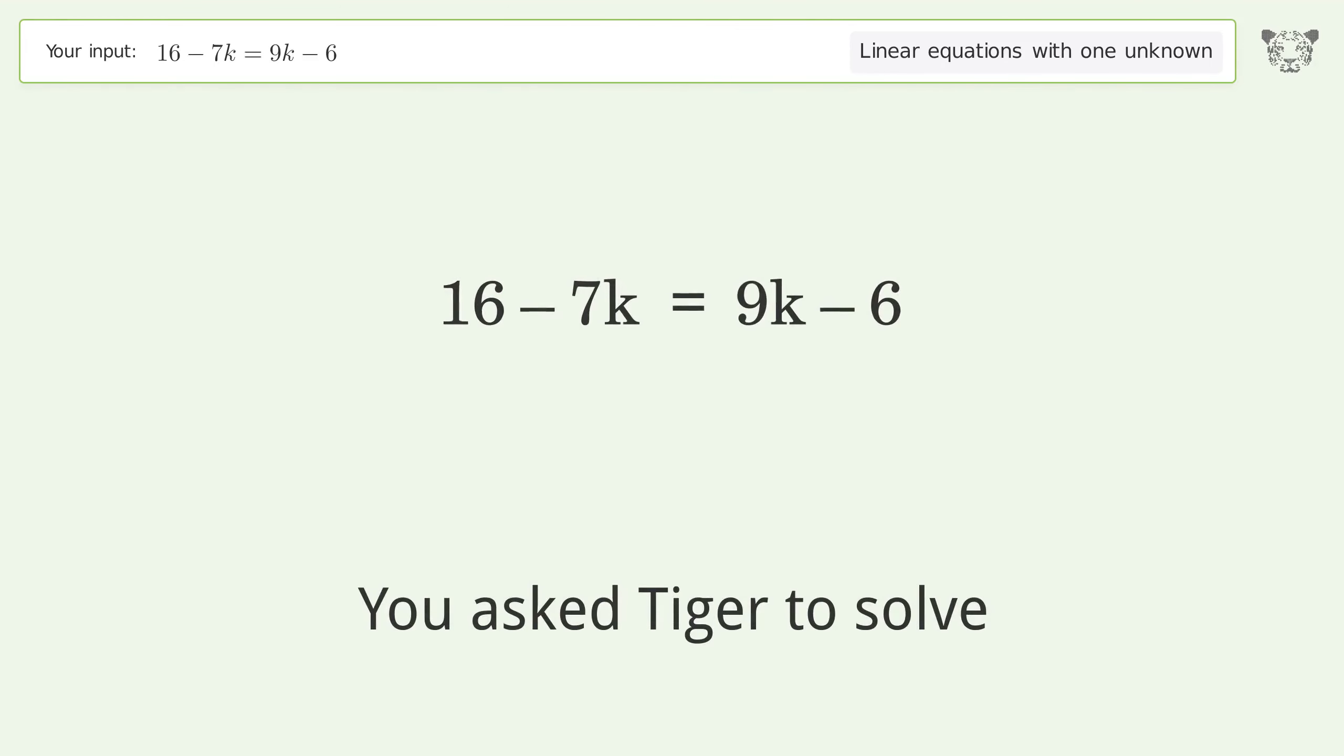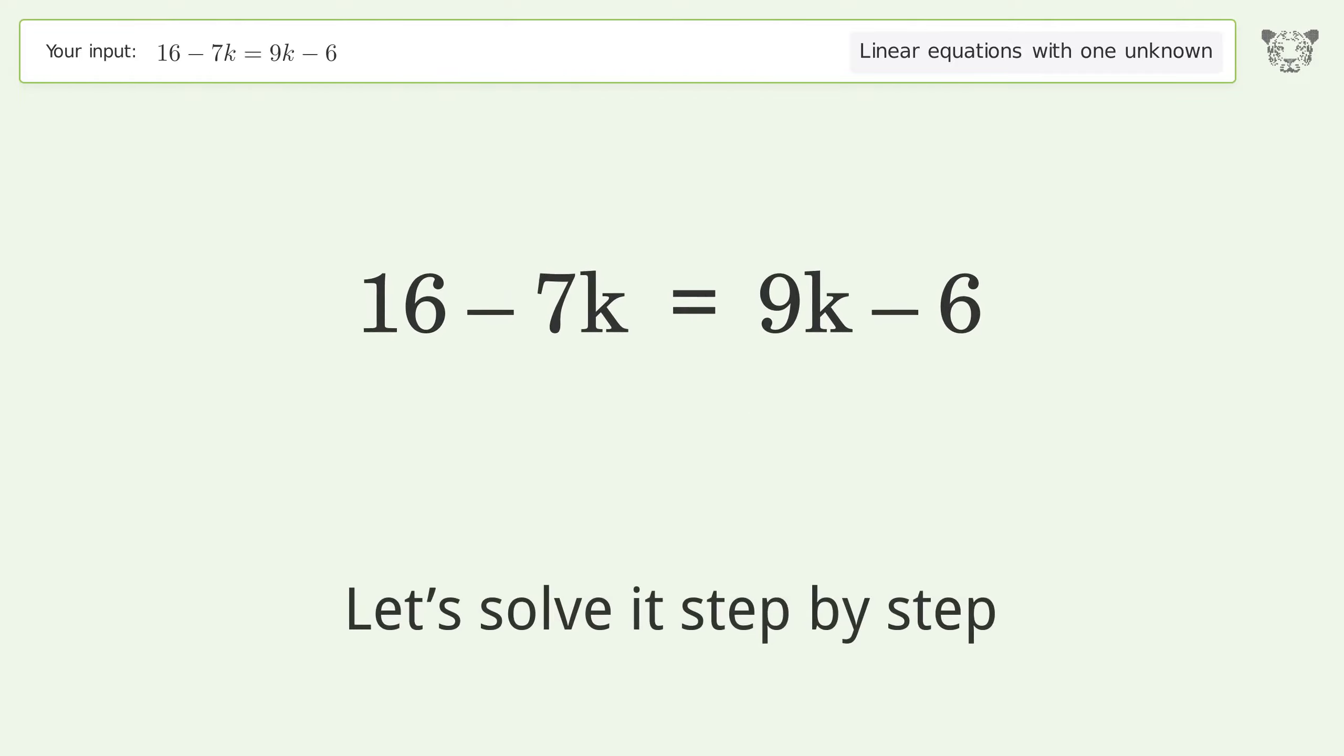You asked Tiger to solve. This deals with linear equations with one unknown. The final result is k equals 11 over 8. Let's solve it step by step.